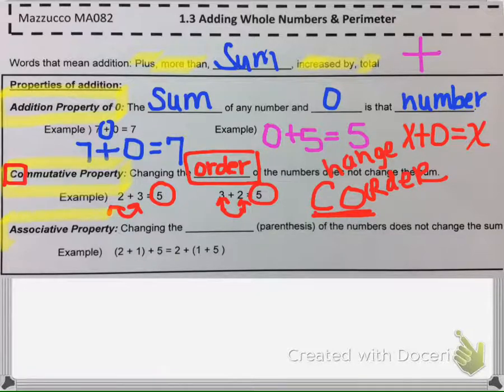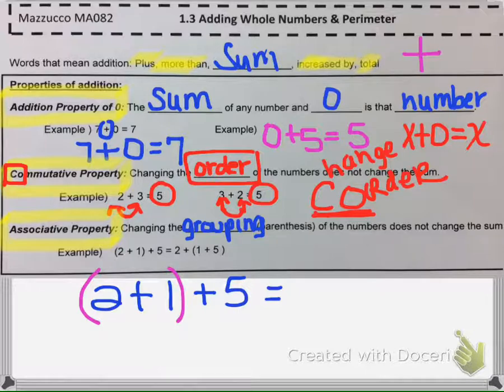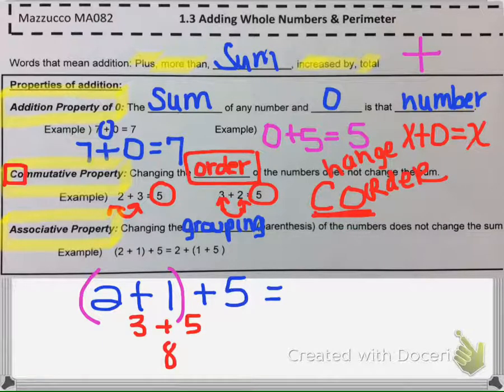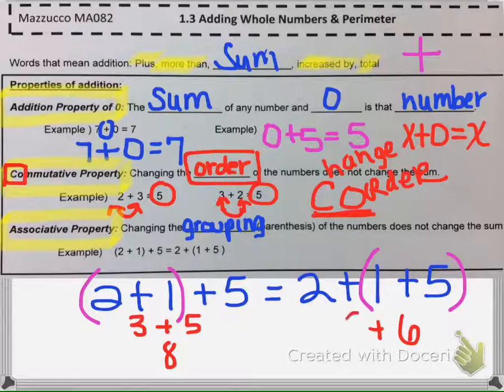Then the third property is called the associative property. The associative property tells us that we can change the grouping. So if we had to add these three numbers up, we can put parentheses around these two and say let's add 2 and 1 first. So 2 + 1 is 3, and then add the 5 to it, and we would get 8.